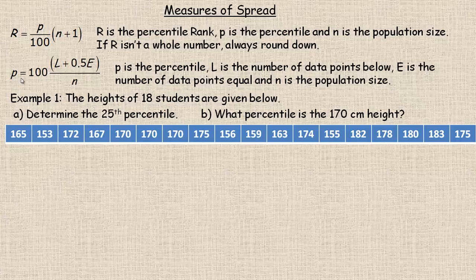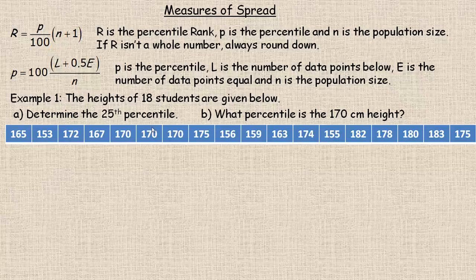The second formula is used if you're given a specific number in your data set to determine what percentile that number is. L is the number of data points below that number, E is the number equal to it, and again N is the population size. In this example, the heights of 18 students are given — we need to find the 25th percentile and what percentile the 170 cm height is. Notice that these are not in order, so you need to order them.